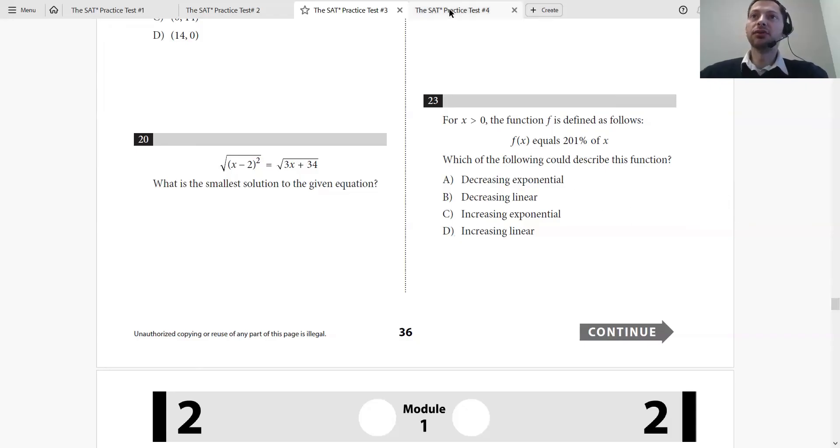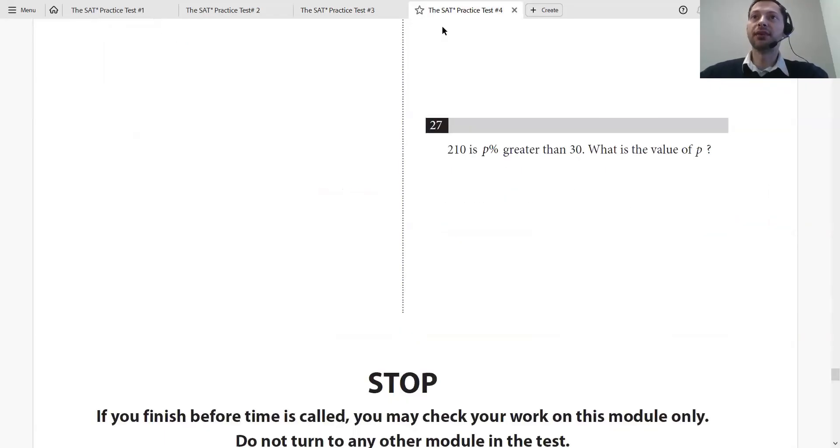Let's go to another example, 27. This is a seemingly complicated example. A lot of students got this question wrong, but let's just use the rules that we just learned. 210 is p% greater than 30.